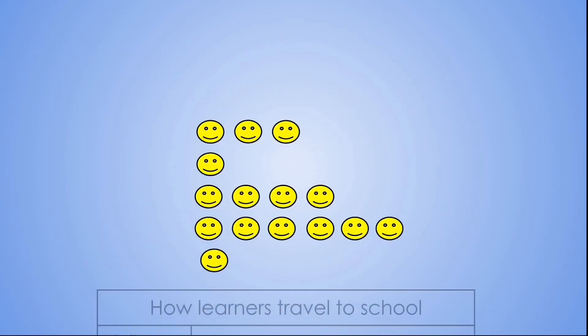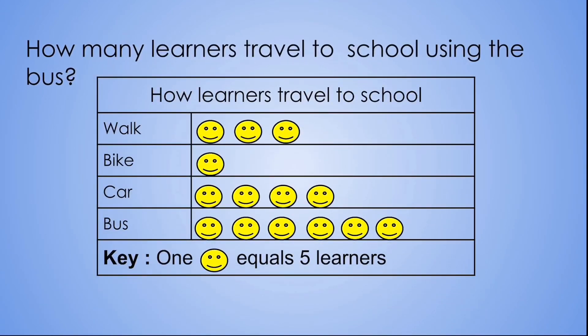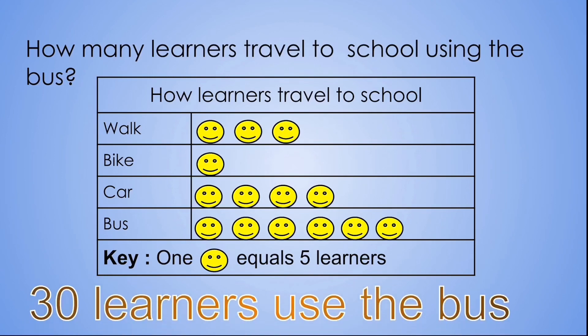Let's have a look at our next question. How many learners travel to school using the bus? Now we're going to look at the bus row. How many smiley faces are there? One, two, three, four, five, six. But remember one smiley face equals five learners, therefore we need to count in fives. Let's count together: five, ten, fifteen, twenty, twenty-five, thirty. Therefore there are thirty learners that use the bus.